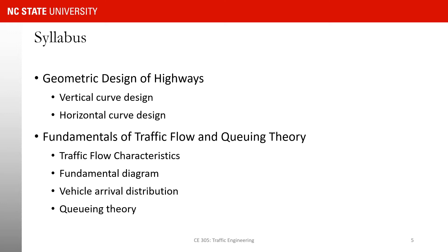Chapter five covers fundamentals of traffic flow and queuing theory. We discuss macroscopic traffic flow characteristics — traffic volume, flow rate, average speed, and density. We also cover microscopic characteristics, looking at individual vehicles: headways, speed of each vehicle, and spacing between vehicles. We then study the fundamental traffic flow diagram and how flow rate, speed, and density relate to one another, as well as vehicle arrival distributions and queuing theory. This chapter provides fundamentals for many concepts covered later in this class and in follow-up courses.